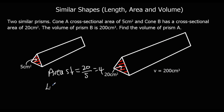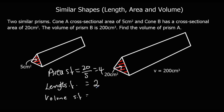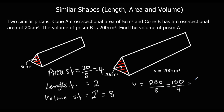We can't go directly from the area scale factor to the volume scale factor — we first need the length scale factor. If the area scale factor is 4 and that's squared, we square root it to find the length scale factor, which is 2. Then the volume scale factor is 2 cubed, which is 8. Going from the big shape to the small shape, we divide by 8: 200 divided by 8 is 25 centimetres cubed.